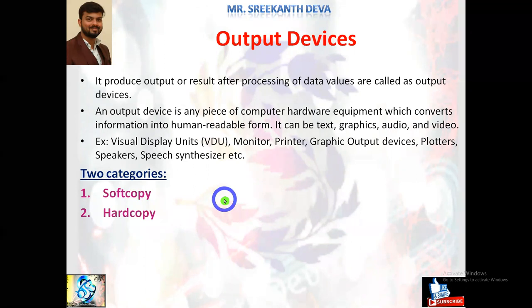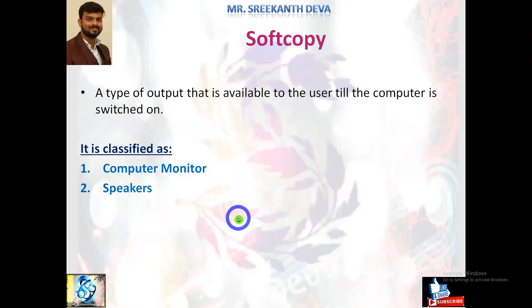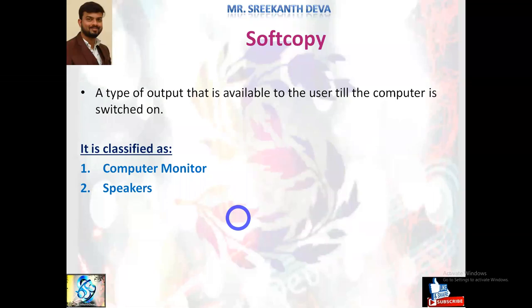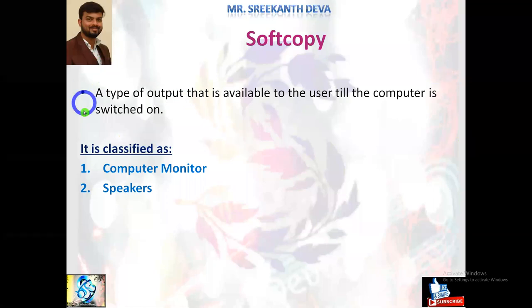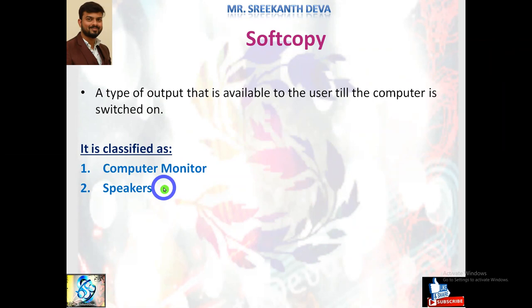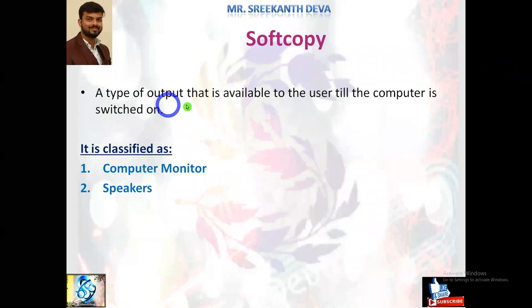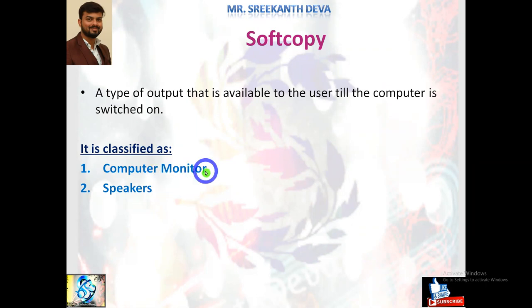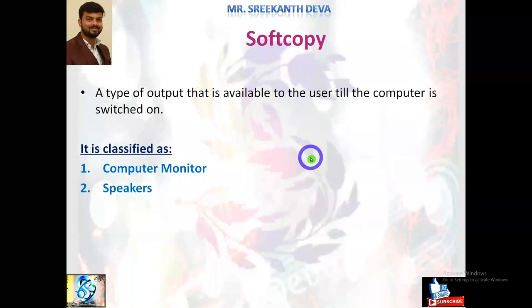Output devices are basically categorized into two types: soft copy and hard copy. A soft copy is a type of output that is available to the user only while the computer is switched on — it goes off as soon as we switch off the computer. Examples of soft copy output devices include computer monitors and speakers.